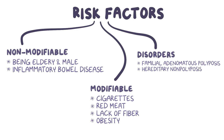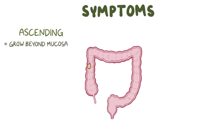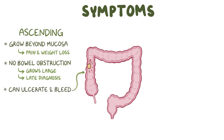Initially, colorectal carcinoma is often asymptomatic, but as the disease progresses, symptoms can develop depending on the tumor's location. Tumors in the ascending or right colon generally grow outward beyond the surface of the mucosa, and that can cause vague abdominal pain and weight loss. Typically these tumors don't cause bowel obstruction, which means they can grow quite large before causing symptoms, often leading to a late diagnosis. These tumors can ulcerate and bleed, and over time the bleeding can lead to iron deficiency anemia.